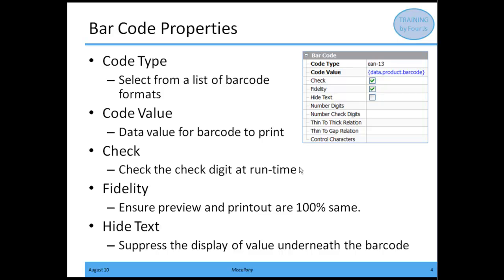For fidelity, fidelity is going to ensure that the preview and the printout are 100% the same — this is going to be a Boolean. It controls the way text is output. If set, the property ensures that the preview and the printout are the same. In some cases, this is necessary when the operating system font definitions deviate from the built-in font definitions of the printer. This flag then instructs the output routine not to use the printer font.